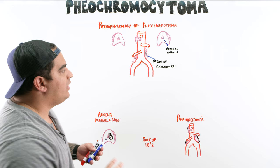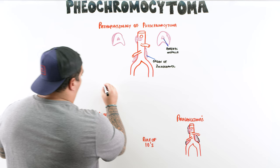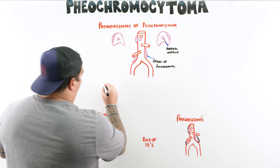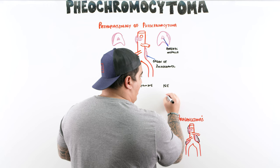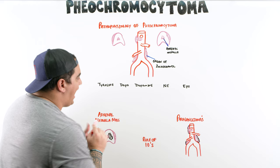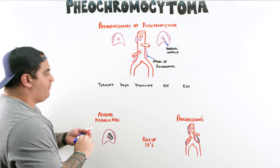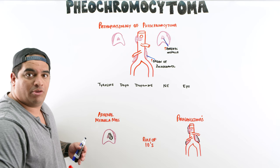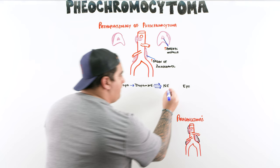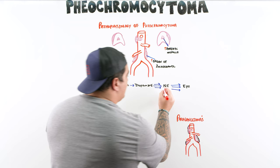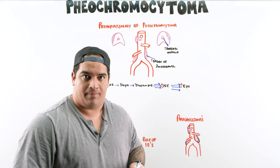In pheochromocytoma, if we zoom in to these two particular tissues, the body takes a molecule called tyrosine — an amino acid — that eventually gets converted to dopa, then to dopamine, then to norepinephrine, and eventually to epinephrine. What happens in these patients is there's increased activity of the organ of Zuckerkandl or the adrenal medulla, so tyrosine is being heavily shunted into making norepinephrine and epinephrine, significantly increasing the synthesis of both.